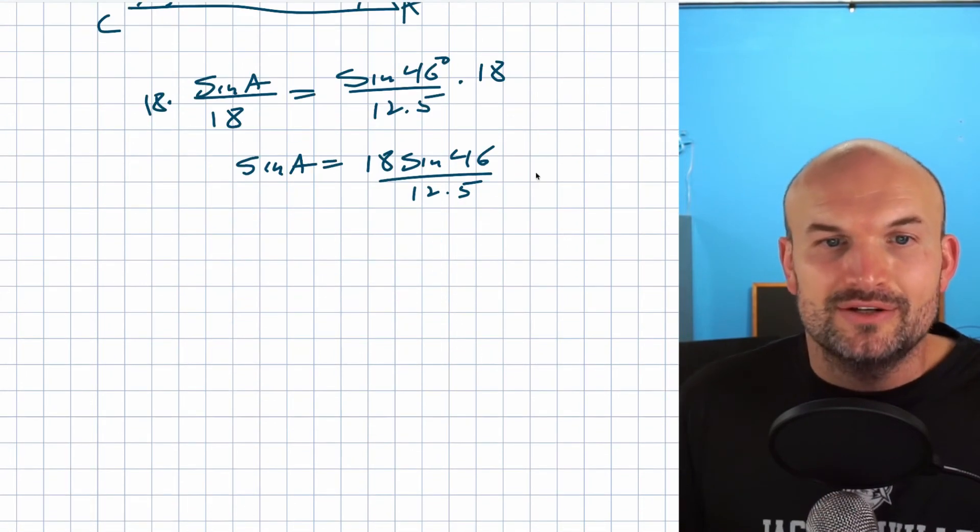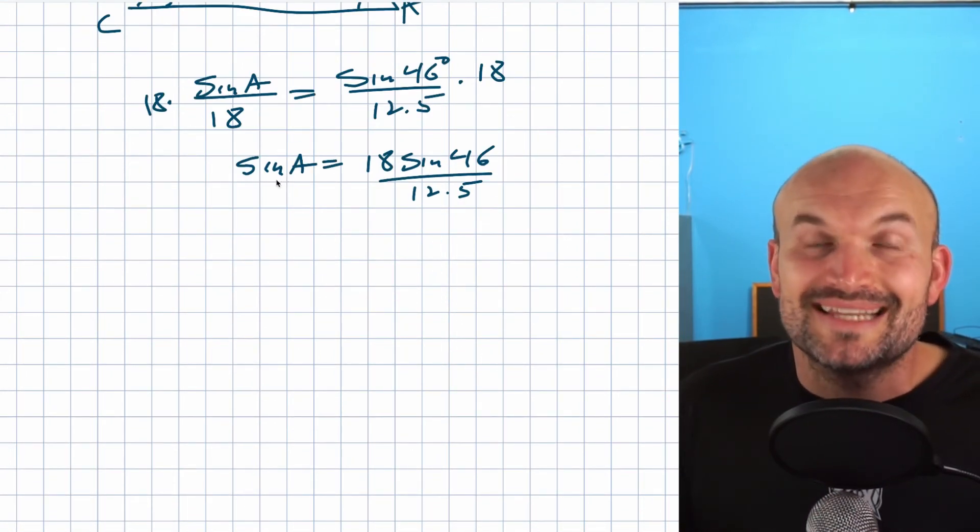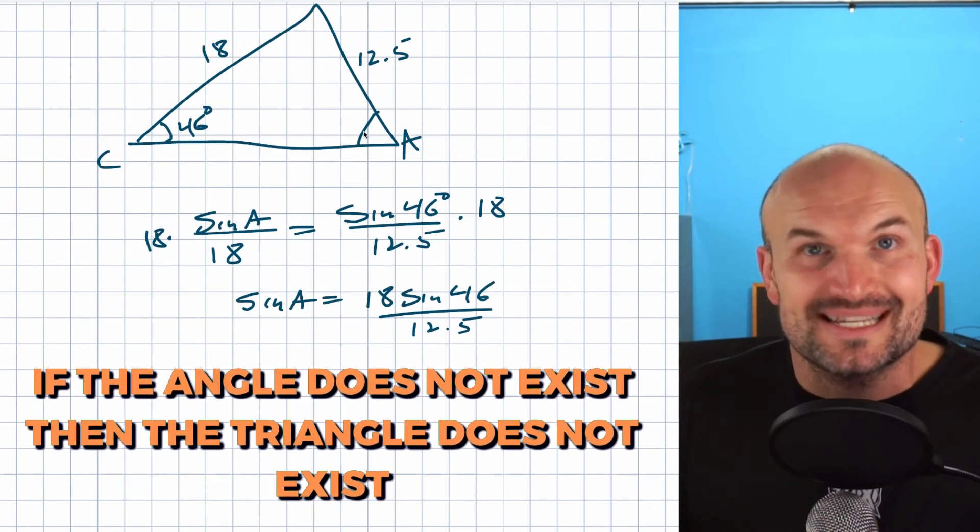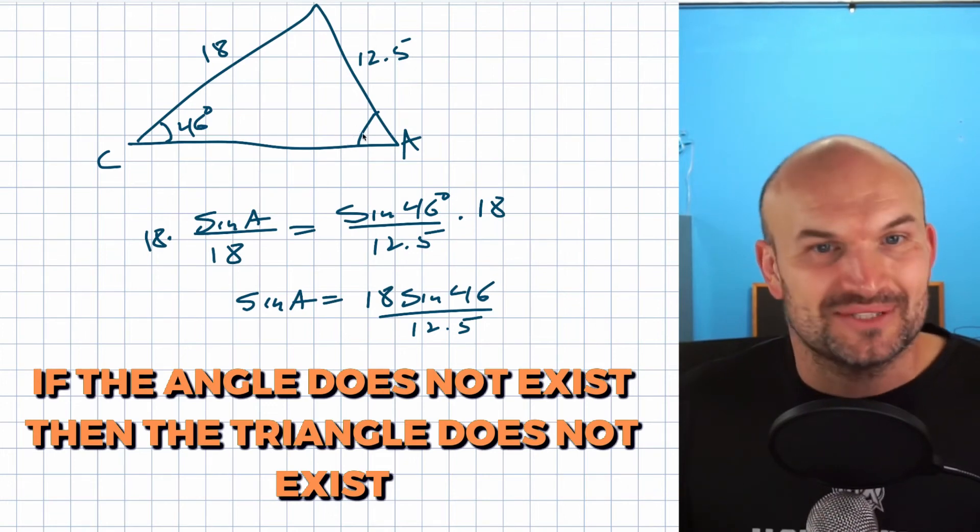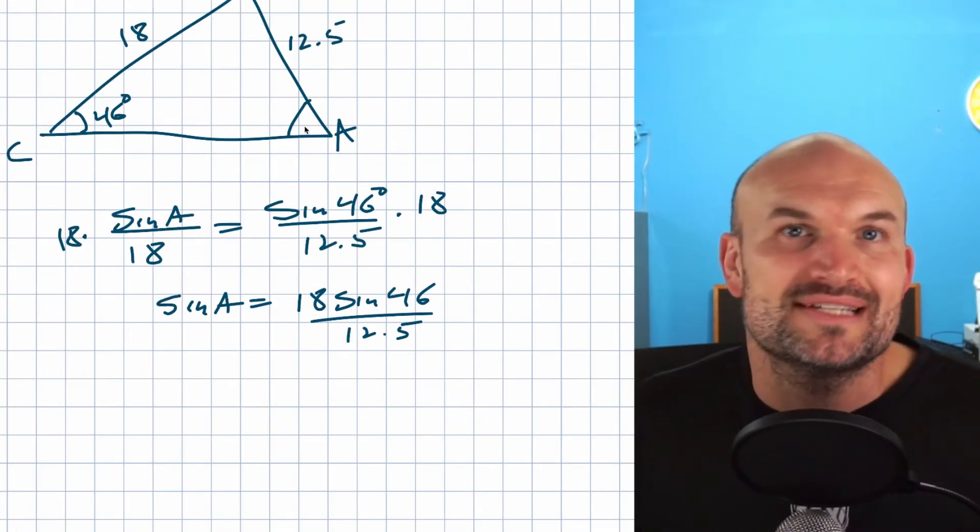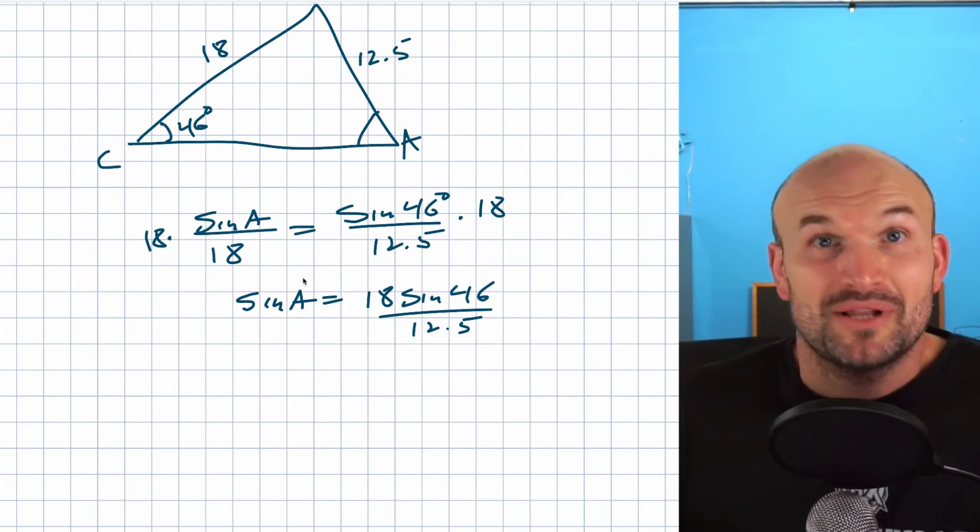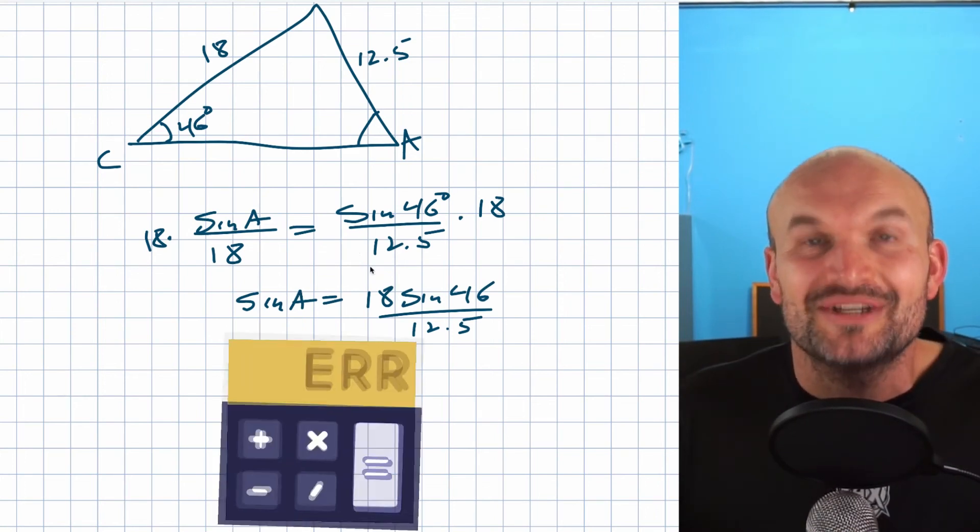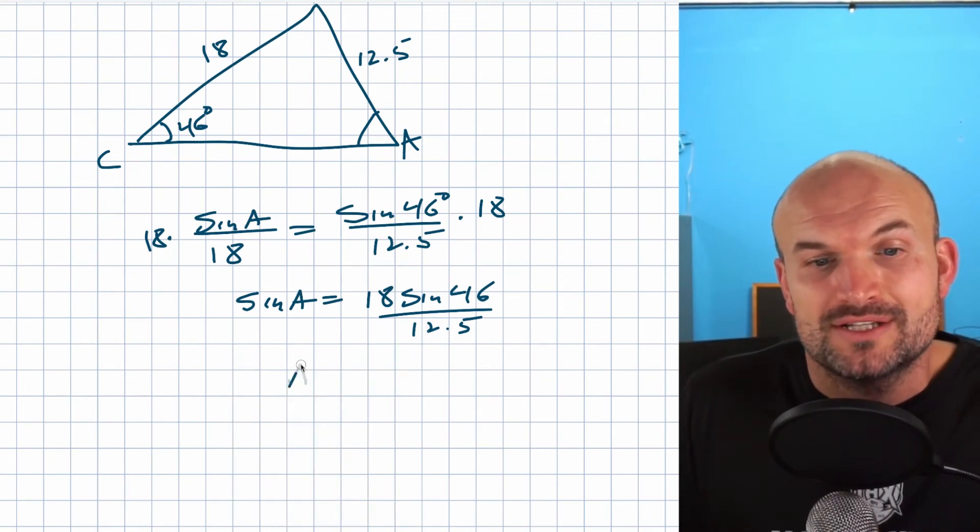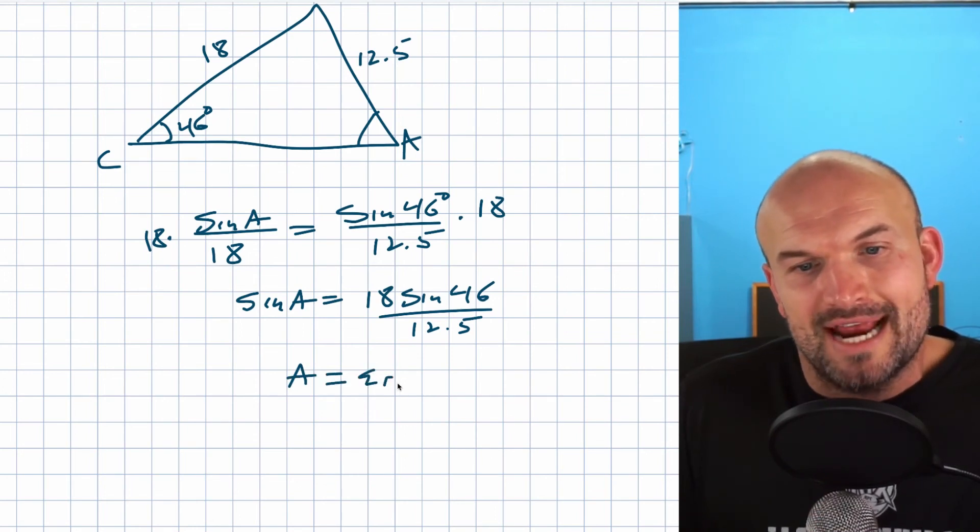The cool thing is when you go and solve for A, we have to take the sine inverse. And if this angle does not exist, then the triangle does not exist. So how are you going to know if this angle does not exist? Well, go ahead and plug in your calculator. And when you plug in your calculator, you're going to get an error because the ratio is going to be greater than one. So when you get A equals an error, that means this angle does not exist.